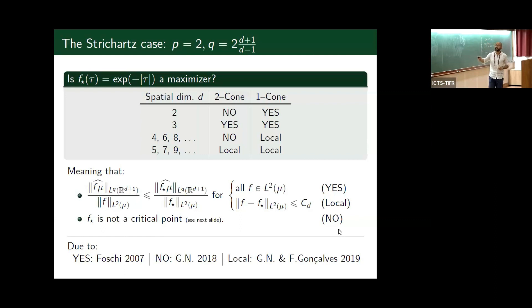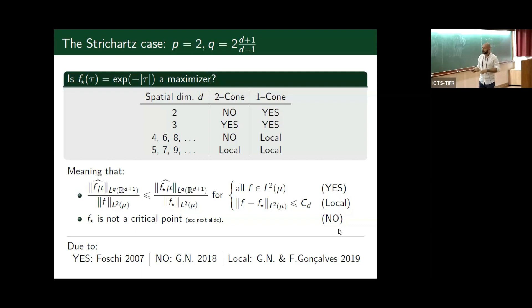In the Strichartz case, when P is 2, this is the estimate called the Strichartz estimate for the wave equation — a fundamental estimate of dispersive PDEs. Surprisingly, in that case we know how to maximize that ratio in some cases: precisely in these three cases here — yes, yes, and yes.